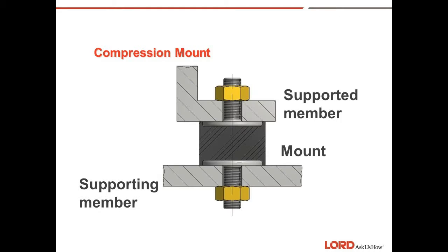Compression mount: This is a flex-bolt sandwich mount installed in compression. The load is in the same direction as the centerline of the stud. This system provides greater lateral and fore-and-aft protection with less vertical cushioning. This is the same mount shown in the previous slide, just installed in a different direction.